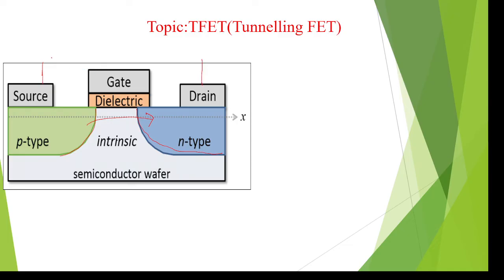Here you can see the source and drain terminals are labeled. The gap between the diffusion areas — between source and drain — is very small, and because of this it requires less threshold voltage to move current from source to drain.